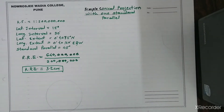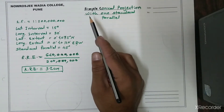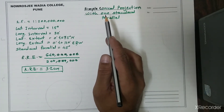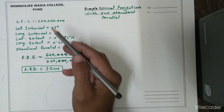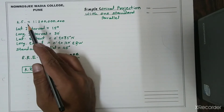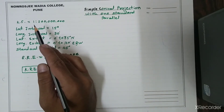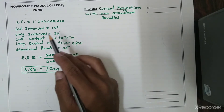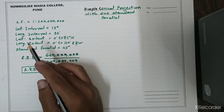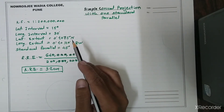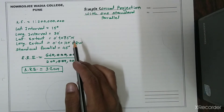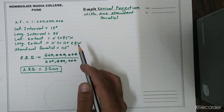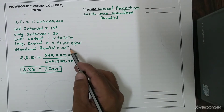Hello friends, today we are going to construct the simple conical projection with one standard parallel. So the name itself says in this projection we are going to construct only one standard parallel. For that purpose we require this data: the RF (representative fraction) is 1:200,000,000, latitudinal interval is 15 degrees, longitudinal interval is 30 degrees, latitudinal extent is 0 to 75 degrees North, meaning the projection is for the northern hemisphere, and longitudinal extent is 0 to 120 degrees East and West.